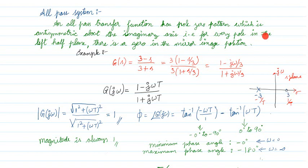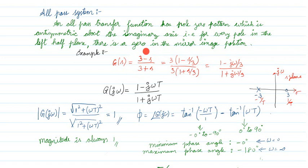They are explaining: for every pole in the left half plane, there will be a zero in the mirror image position. So if I place a mirror at the imaginary axis, there will be a corresponding zero on the right side. This type of transfer function is called an all-pass system.